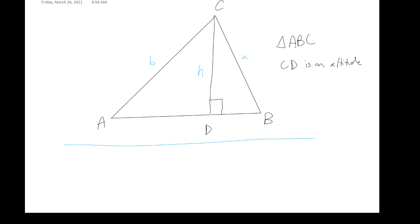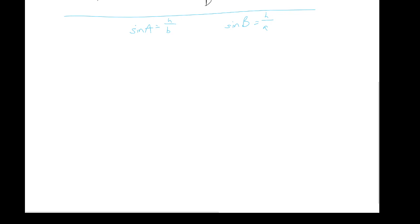Let's take angle A — I can find angle A because it is reflexively included within both right triangle ACD and the bigger triangle ABC, so it's the same no matter what. We can find it by saying the sine of angle A is equal to lowercase h — the opposite side — over b, the hypotenuse of that right triangle. Moreover, we can do the same thing for angle B: the sine of B is going to be lowercase h over lowercase a.